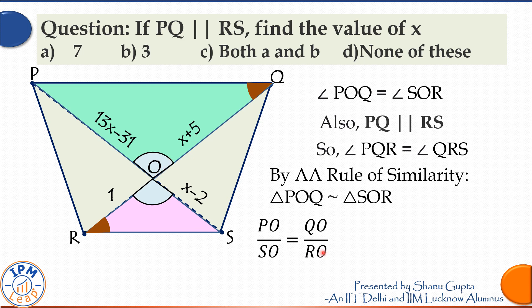Writing these sides in terms of x, we get (13x - 31) upon (x - 2) is equal to (x + 5) upon 1.